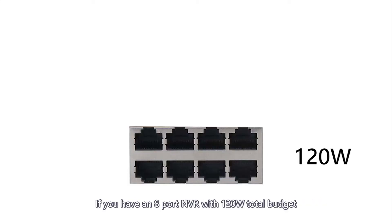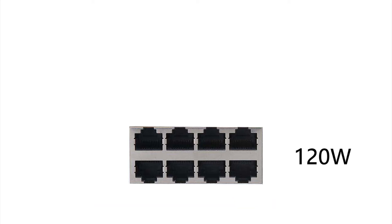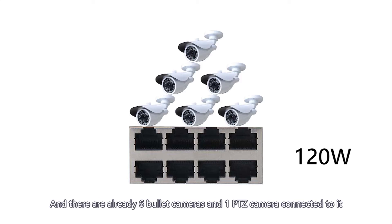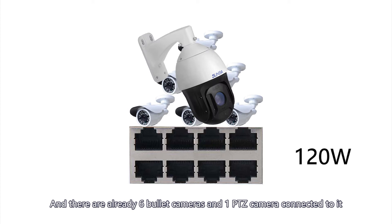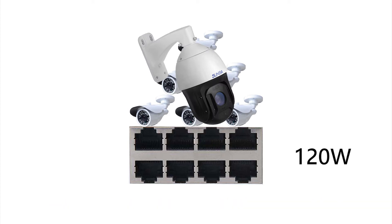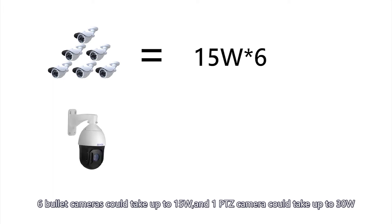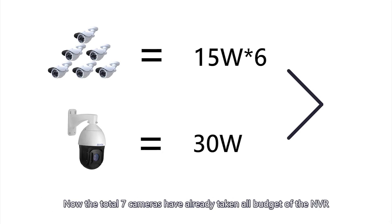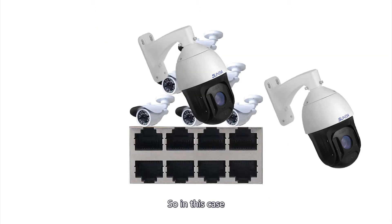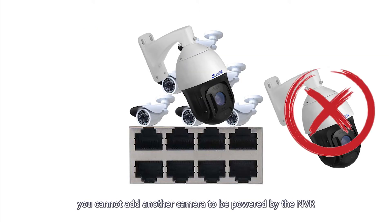If you have an 8-port NVR with 120W total budget, and there are already 6 bullet cameras and 1 PTZ camera connected to it — 6 bullet cameras could take up to 5W per camera, and 1 PTZ camera could take up to 30W per camera — the total 7 cameras have already consumed the entire NVR budget. In that case, you cannot add another camera to be powered by the NVR.